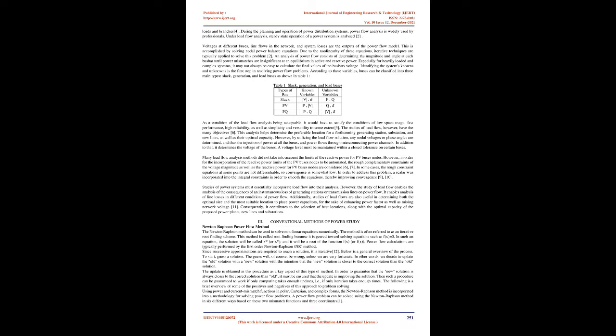Using power and current mismatch functions in polar, Cartesian, and complex forms, the Newton-Raphson method is incorporated into a methodology for solving power flow problems. A power flow problem can be solved using the Newton-Raphson method in six different ways based on these two mismatch functions and three coordinates. In this iterative procedure, the choice of estimated starting points for the unknowns heavily affects convergence to the desired solution. Once the result of iterations is close enough to the solution, under moderate regularity conditions and assuming the Jacobian is non-singular, the algorithm moves toward the solution super-linearly. Newton-Raphson method requires no more than a few iterations regardless of the number of buses, so power flow equations can be solved quickly.